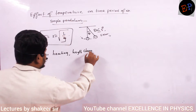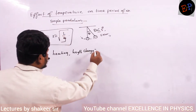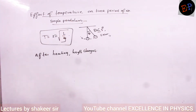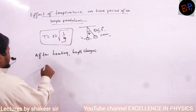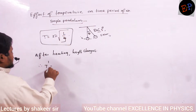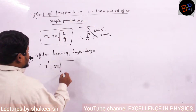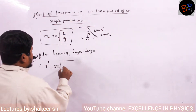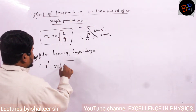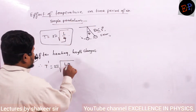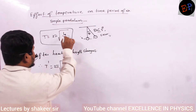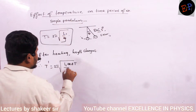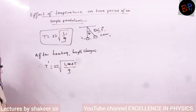Therefore, the new time period T dash equals 2π into the square root of L2, where L2 equals L1 into 1 plus α∆T, divided by G.